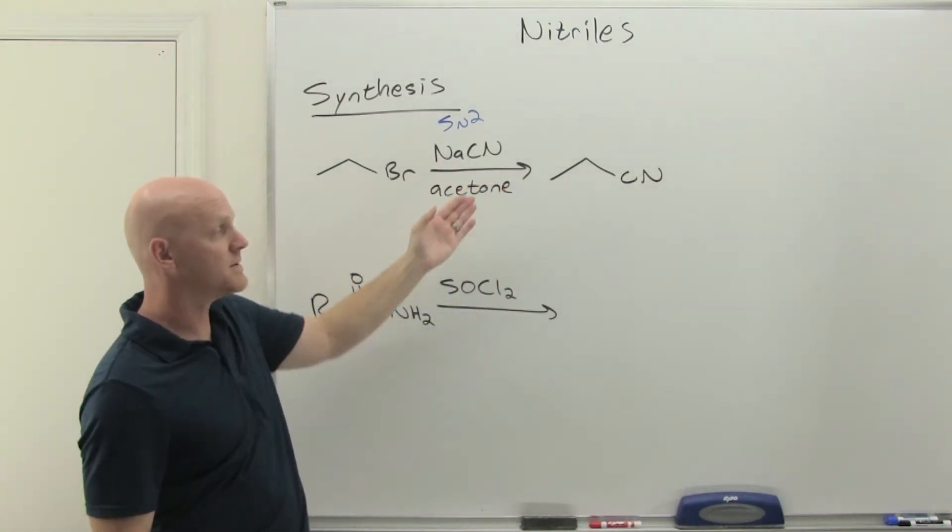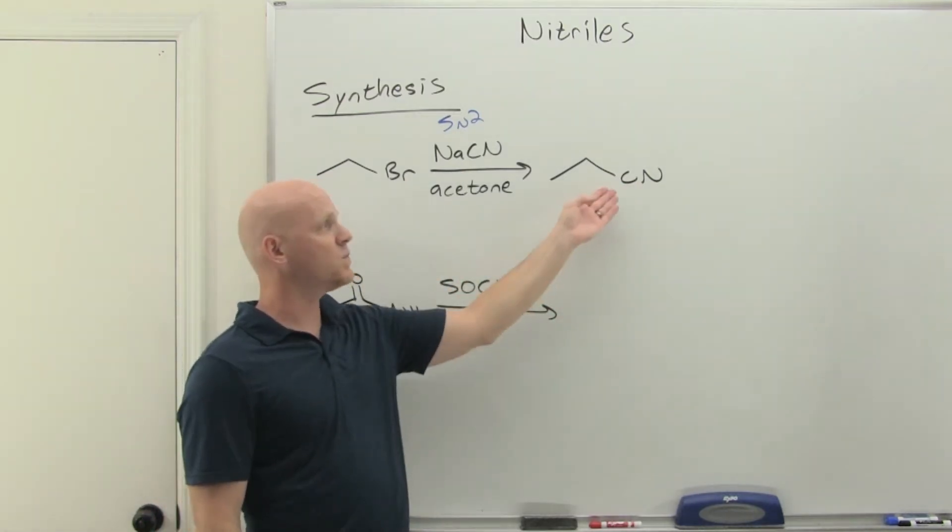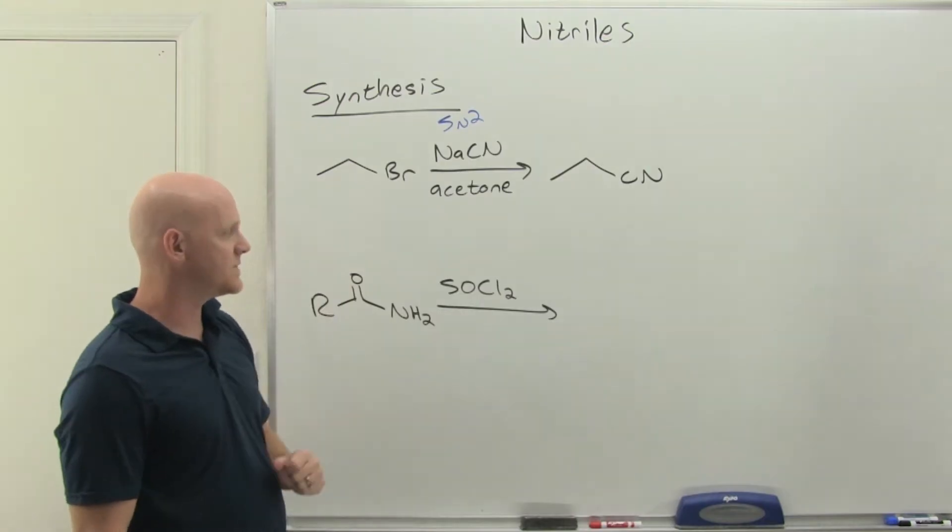You might just see it simply written as NaCN, but you might see the solvent included. Exactly straight up SN2, and now we've made a nitrile with one more carbon than the alkyl halide we started with.